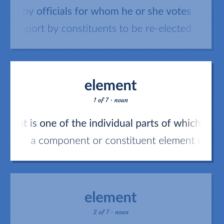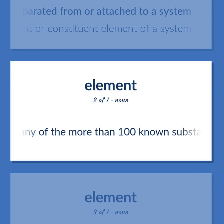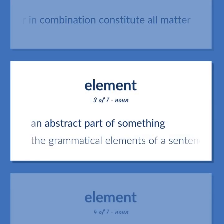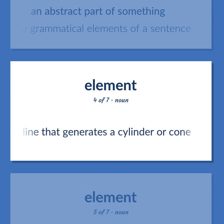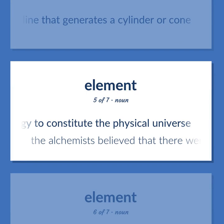Component: An artifact that is one of the individual parts of which a composite entity is made up, especially a part that can be separated from or attached to a system. A component or constituent element of a system. Element: Any of the more than 100 known substances, of which 92 occur naturally, that cannot be separated into simpler substances and that singly or in combination constitute all matter. An abstract part of something. Example: The grammatical elements of a sentence. A straight line that generates a cylinder or cone. One of four substances thought in ancient and medieval cosmology to constitute the physical universe. Example: The alchemists believed that there were four elements.